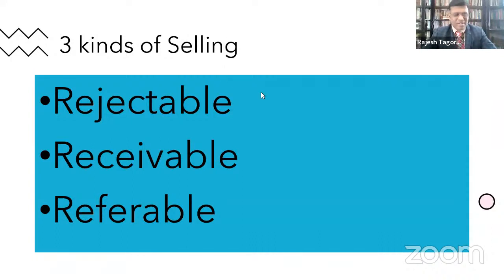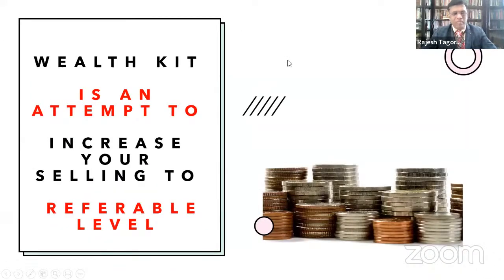We covered rejectable selling, receivable selling, and referable selling. We had a discussion about that yesterday. And Wealth Kit is an attempt to increase your selling level to the referable level. That's what we learned yesterday.